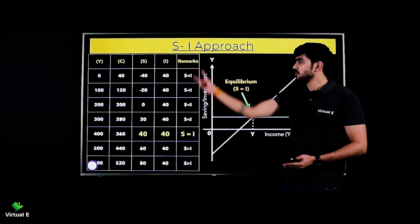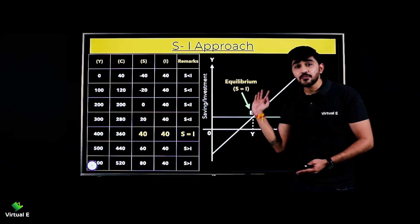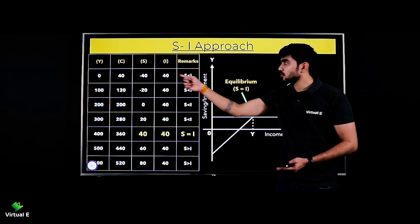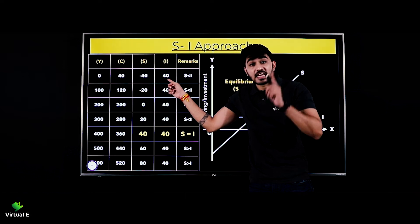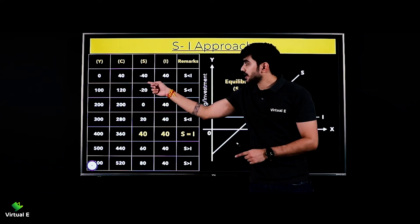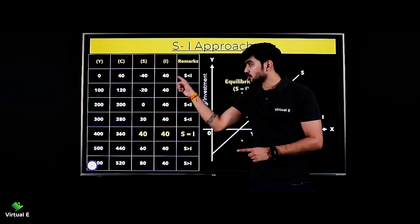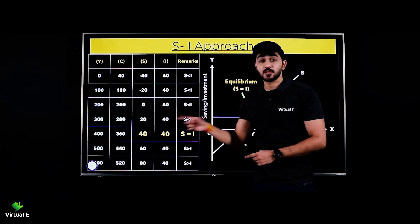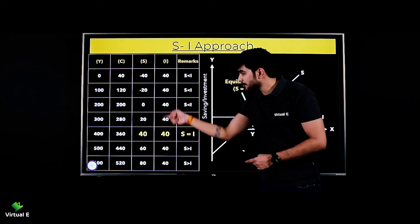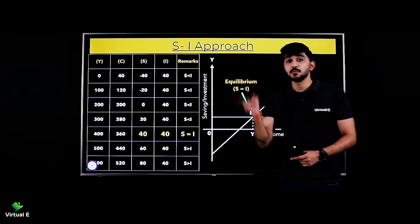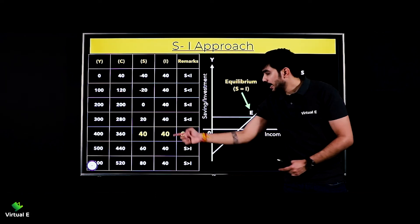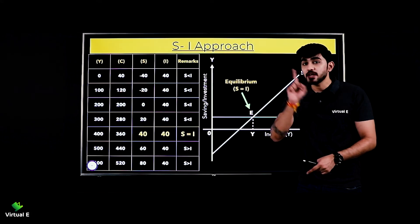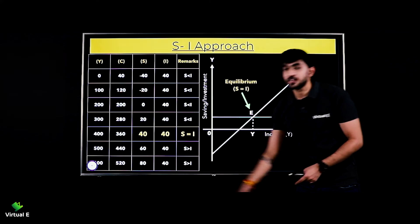Yahan pe bhi kuch phases hain. Equilibrium ke pehle wala jo phase hai, us phase mein saving dekho - minus 40 and 40, so saving is less than your investment. Minus 40 and 40 mein 40 bada, minus 20 and 40 mein again 40 is greater, 0 and 40 mein again 40 is greater. So in this phase, your investment is more than your savings. Equilibrium pe S is equal to I.